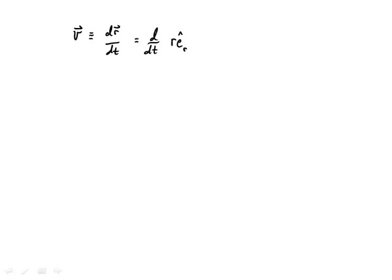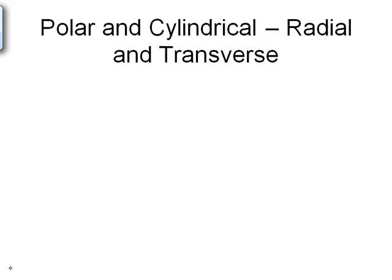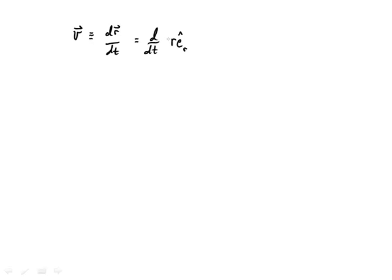But e sub r hat, notice when I went from position one to position two, e sub r hat changed, not in length but in direction, very much like we had happening with the normal tangential system. So in this derivative, we have to use the product rule. This is going to be equal to the derivative of r with respect to time, times e sub r hat, plus r times the derivative of e sub r hat with respect to time.